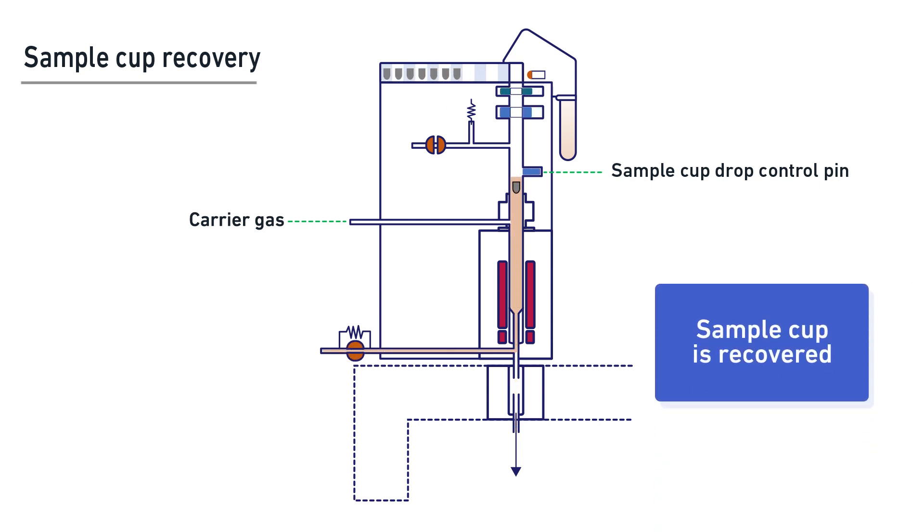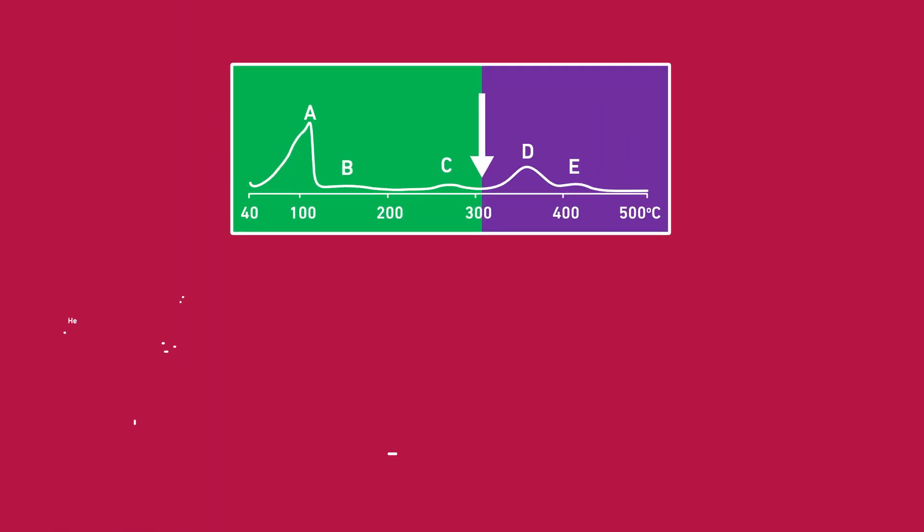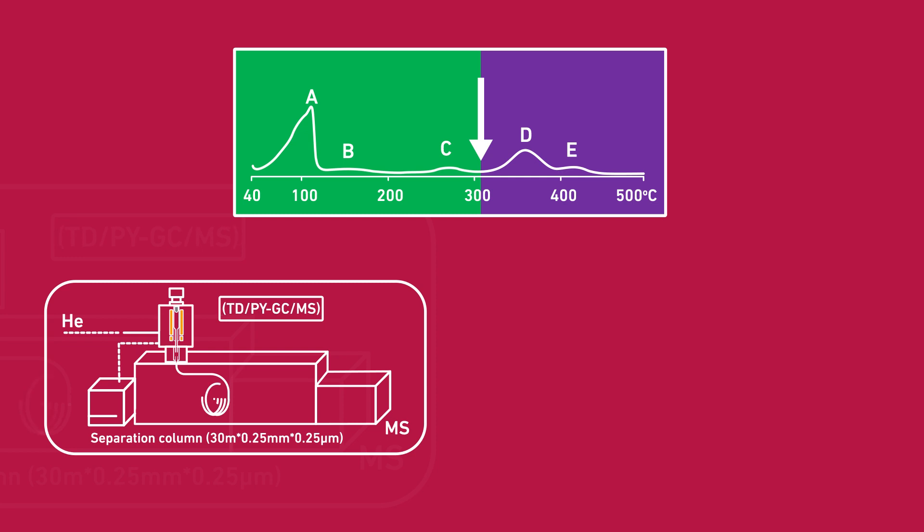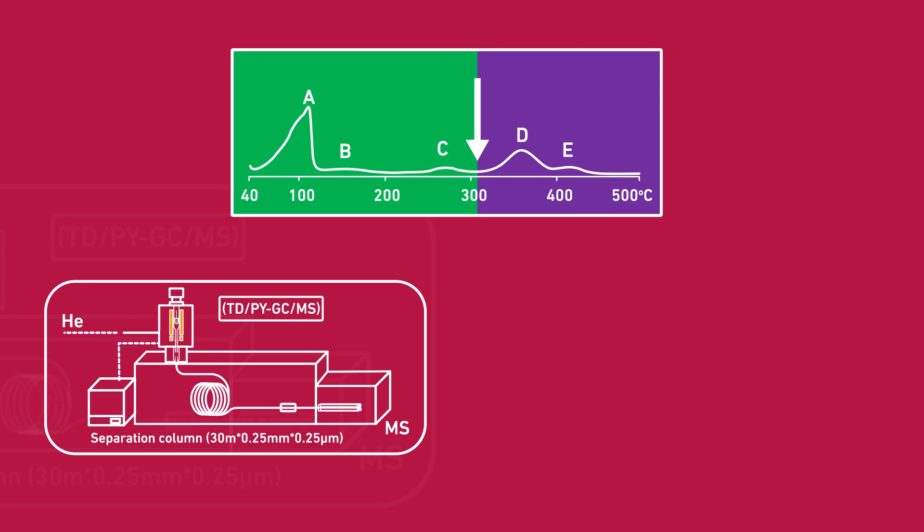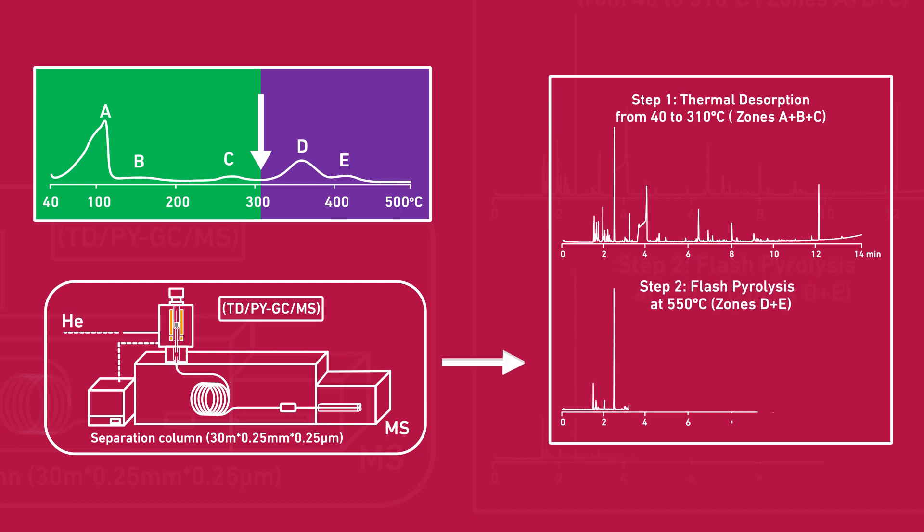The pyrolyzates are transported directly to the analytical column, and the pyrogram is generated. By using the double-shot mode, first, volatiles evolving from the sample are analyzed by thermal desorption. Then, the residual sample is pyrolyzed for identification of the heavier and polymeric content of the sample.